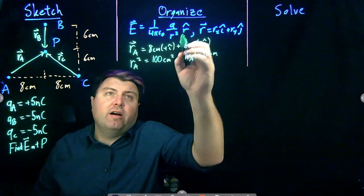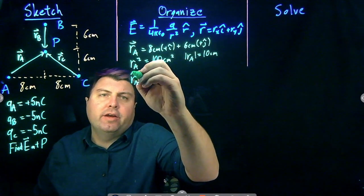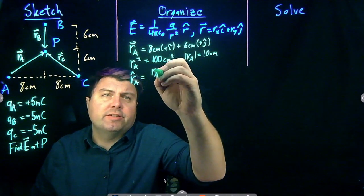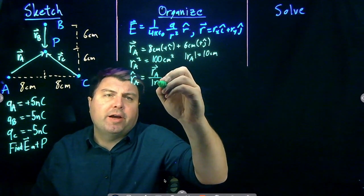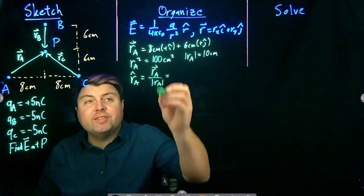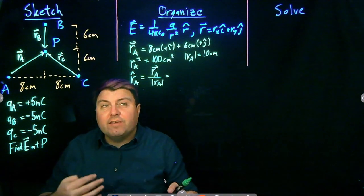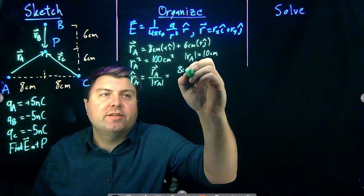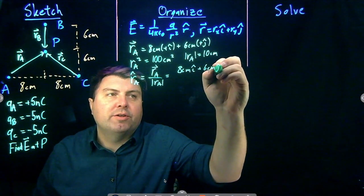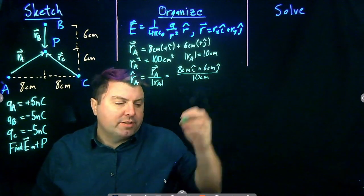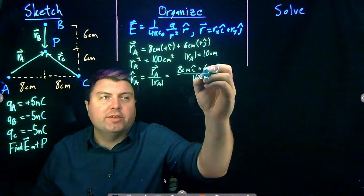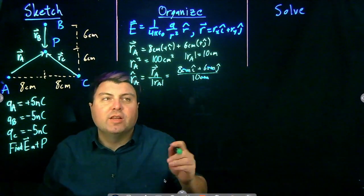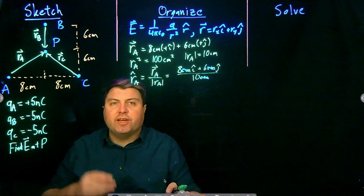The magnitude of R_A is therefore 10 centimeters. Now I need to find R̂_A. The unit vector is the vector itself divided by its magnitude. So R̂_A equals (8 cm î + 6 cm ĵ) divided by 10 cm. The centimeters cancel — unit vectors should be unitless — giving R̂_A = (8î + 6ĵ) / 10.